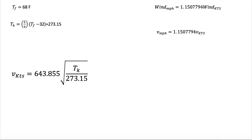So now let's use a pen here. V in miles per hour is the question mark — we don't know what it is. We need the speed of sound calculated in miles per hour. This is what we need to find.